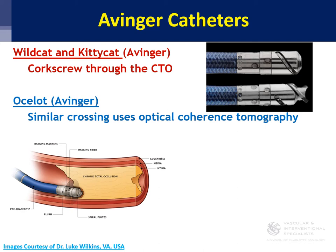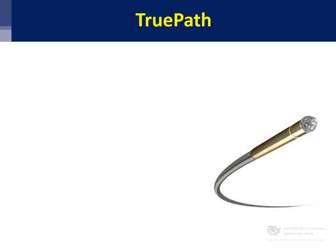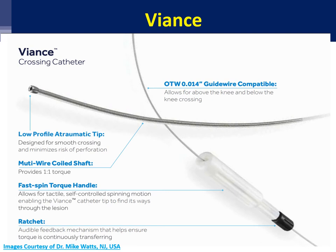The Ocelot is very similar but super fancy — it does the same thing except it uses OCT, so you can actually visualize whether you're true lumen, whether you're going eccentric, or staying in the center of the lumen. Here's the OCT image — you can see you're in the lumen and can see outside whether you've gone subintimal. Similarly, the Viance catheter has a low-profile atraumatic tip; you spin it and the spinning motion finds its way through the lesion, crossing true lumen rather than going subintimal.